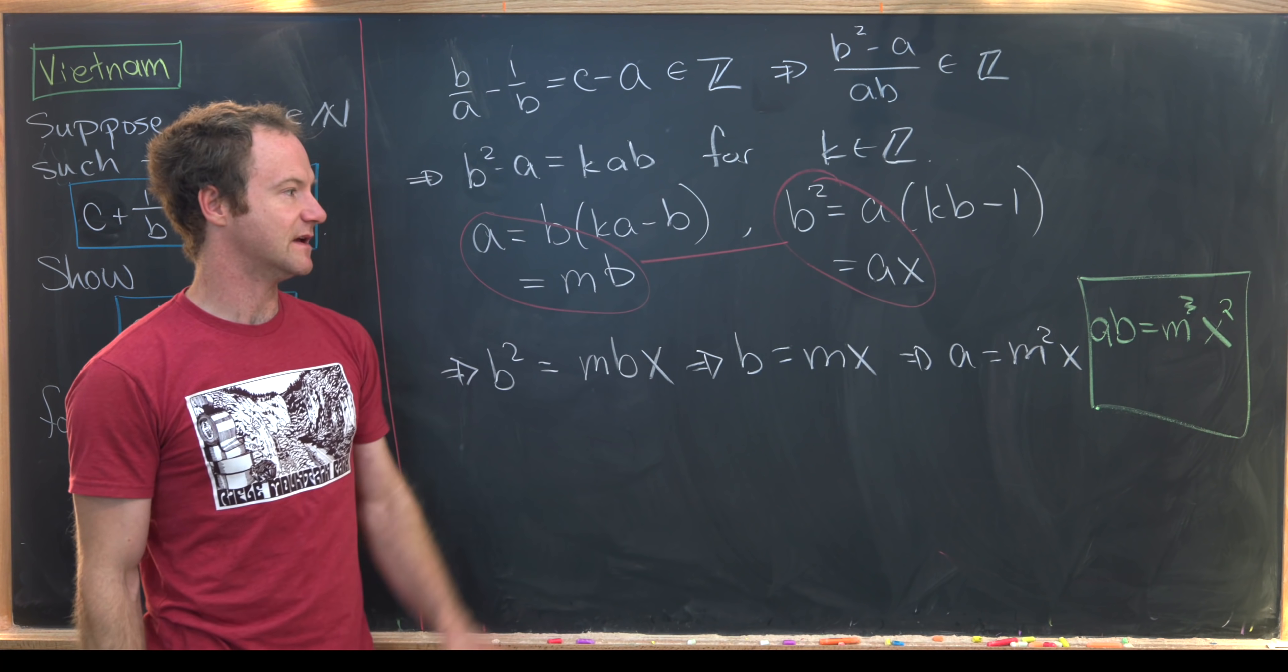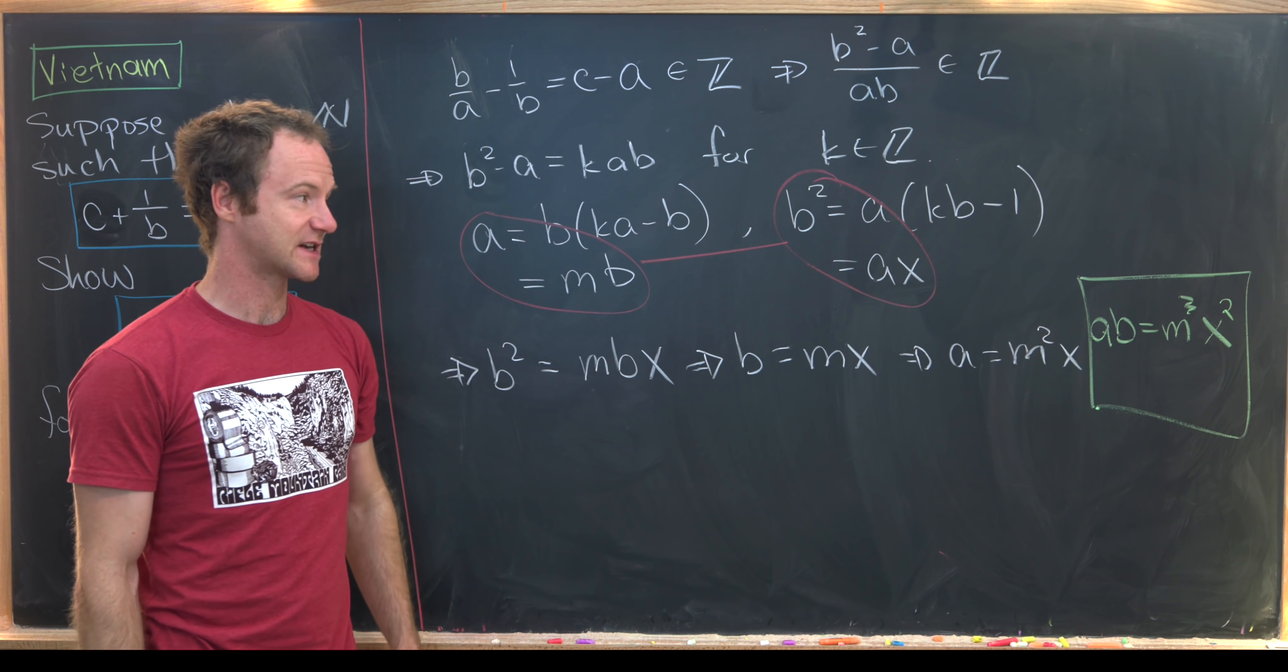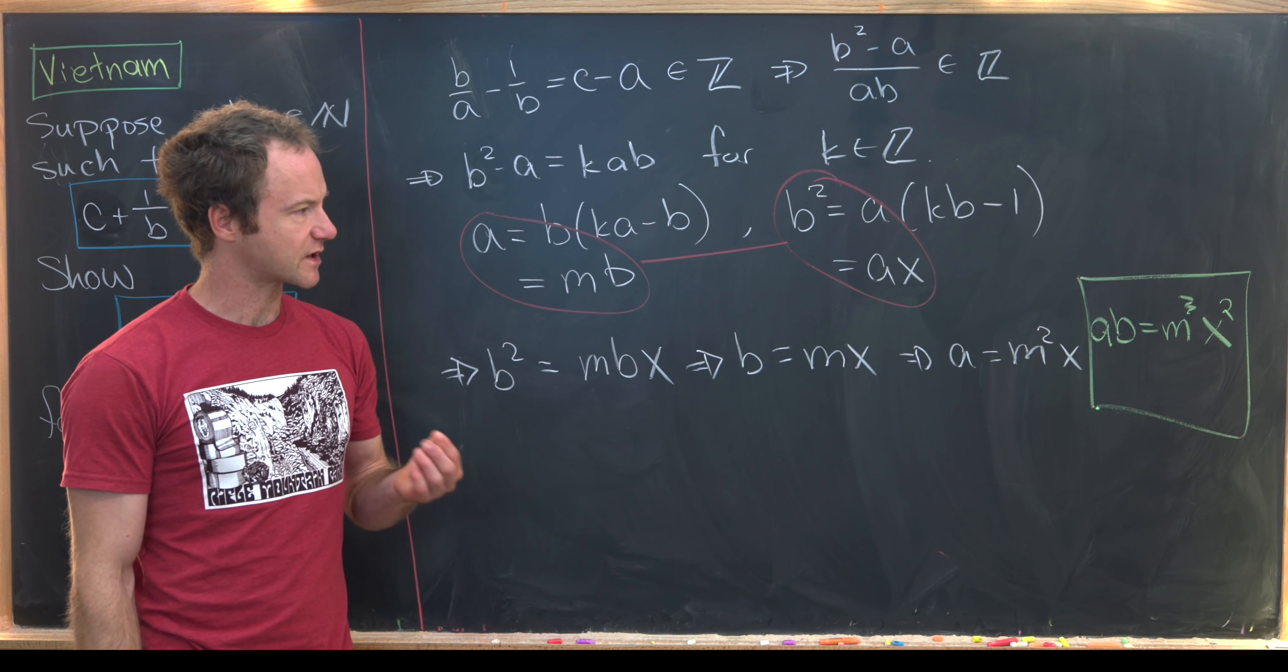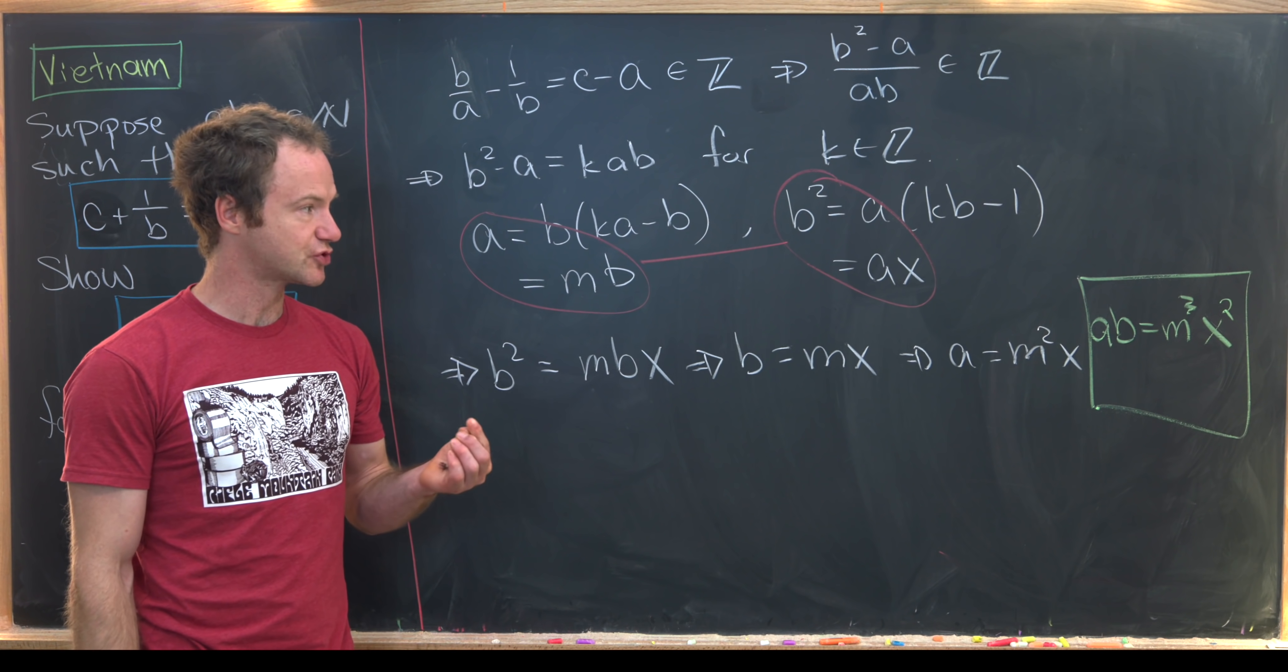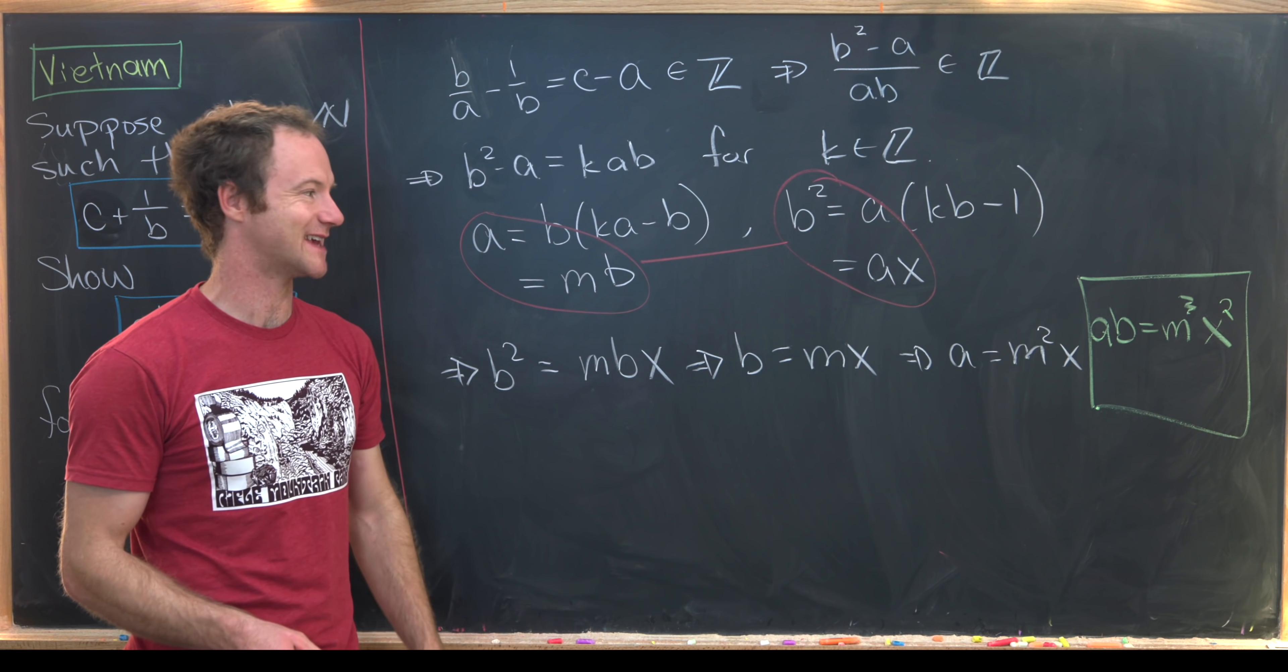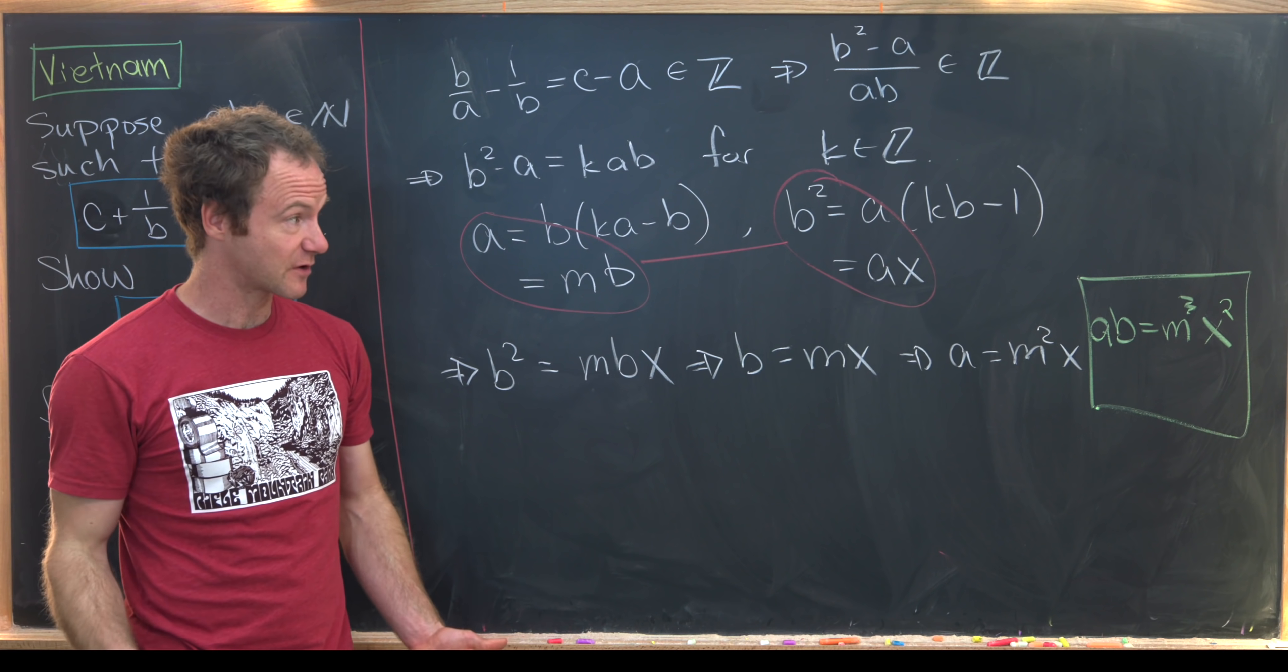Okay, but notice M cubed is already a perfect cube. So we just need to show that X squared is a perfect cube. And how this works out is usually when we've got this extra term here, this extra term is extra special nice.